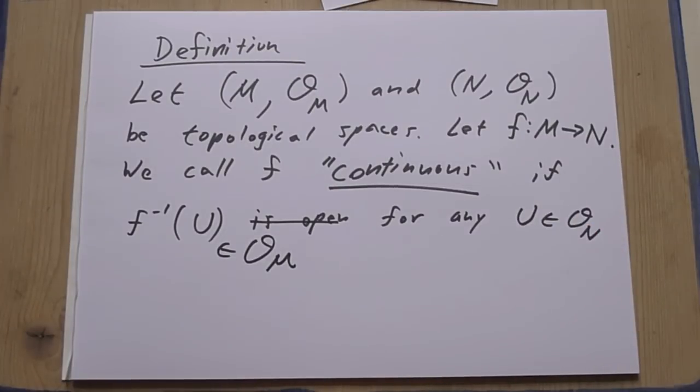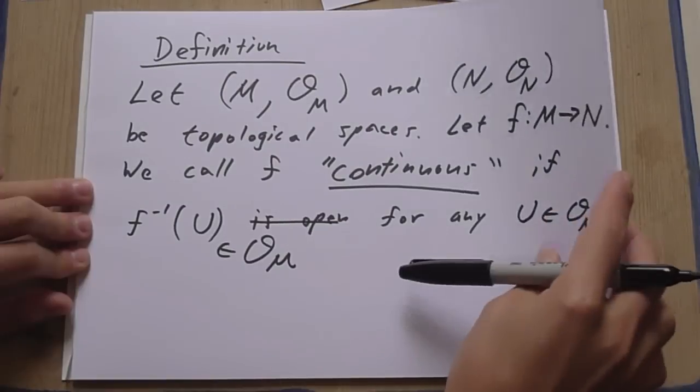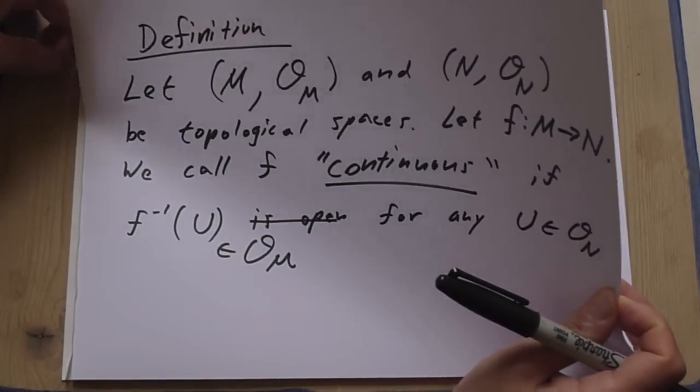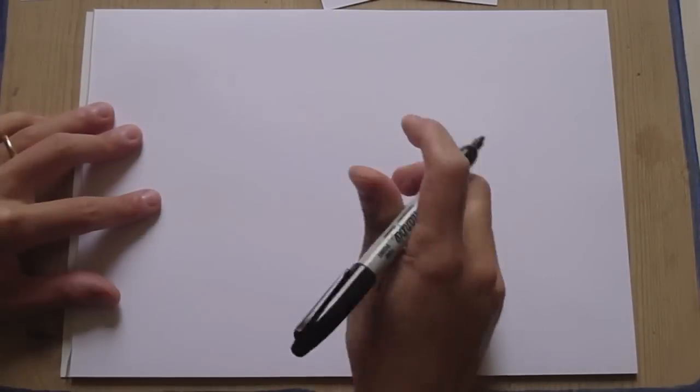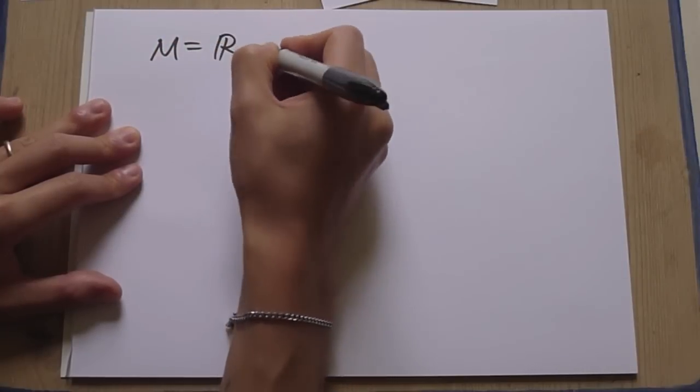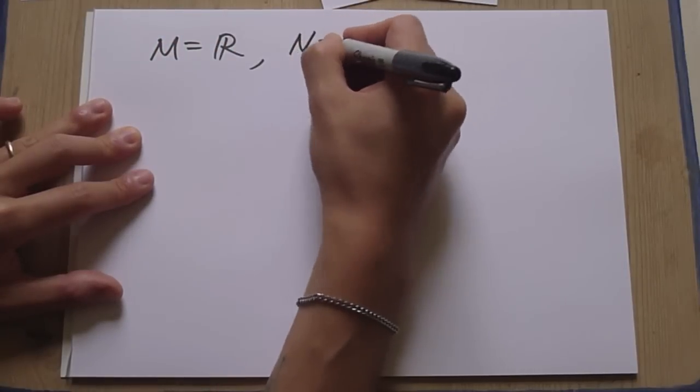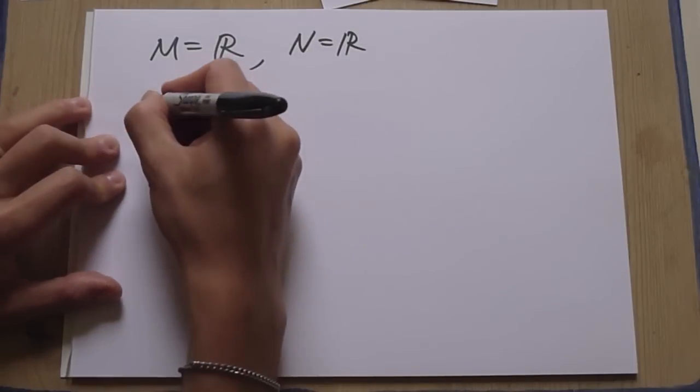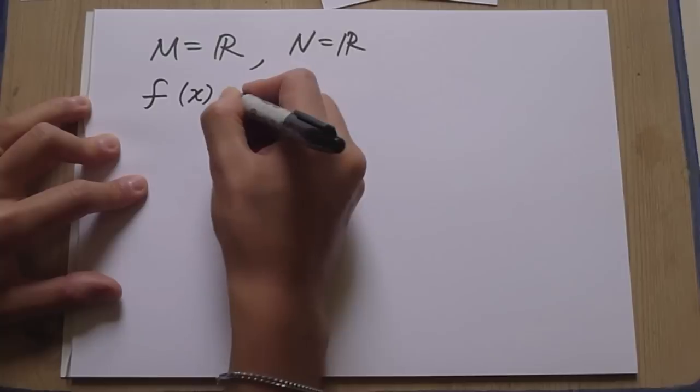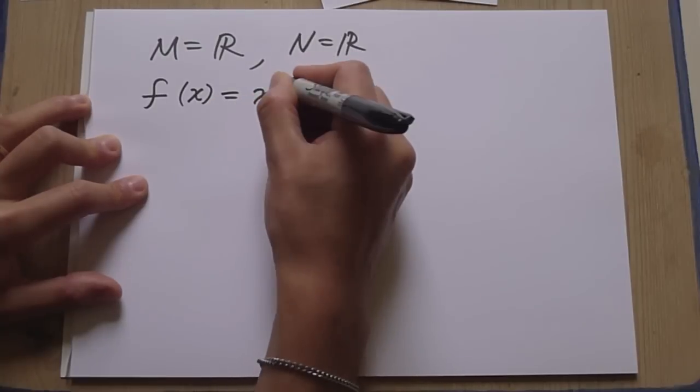Okay, so this does not look like what we normally think of when we think of things as being continuous. But let's just double check that it works for the real line.